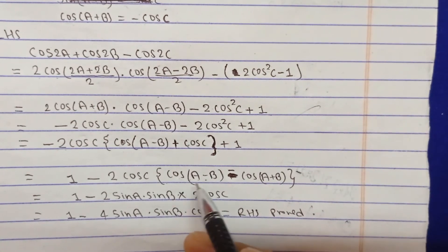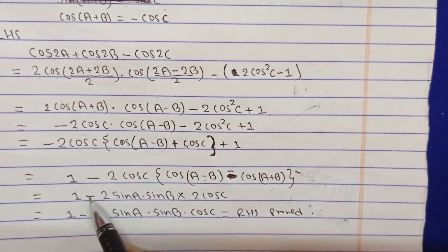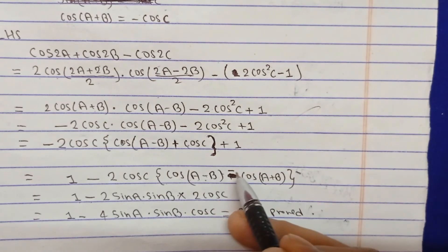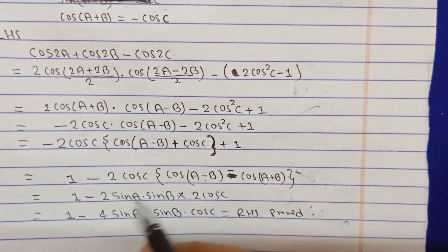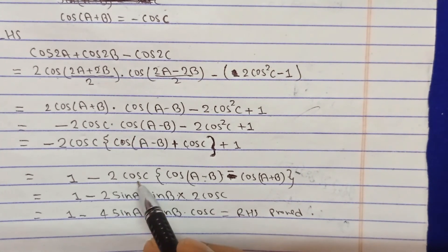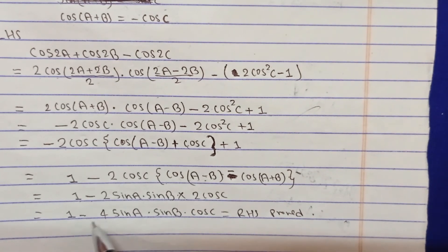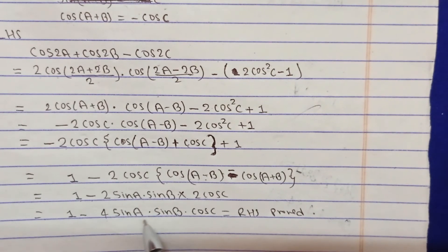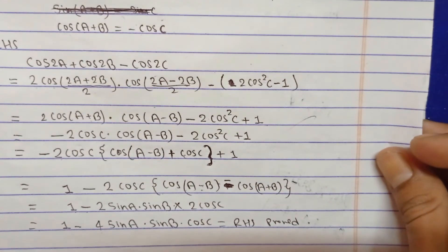Now apply the formula: cos(A-B) minus cos(A+B) equals 2sinA sinB. Substituting, we get 1 minus 2cosC times 2sinA sinB, which equals 1 minus 4sinA sinB cosC. This equals the RHS, and the proof is complete.